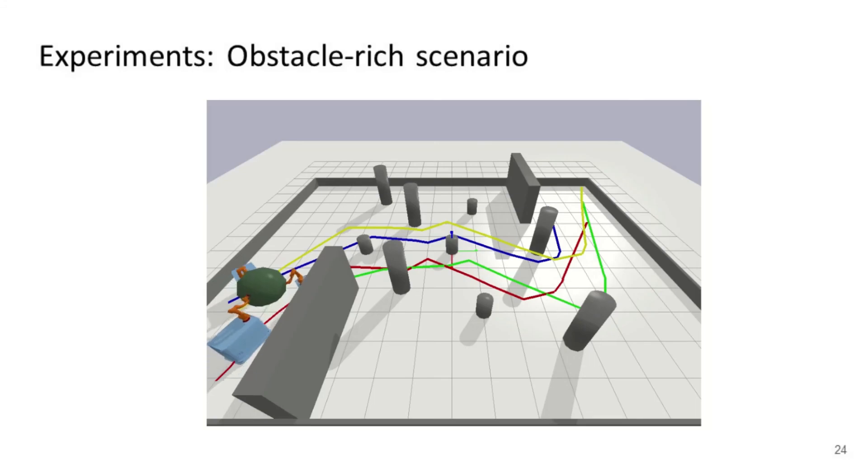In the second experiment, we evaluated our planner on a team of three mobile manipulators in an obstacle-rich scenario. Our simulation demonstrated that our proposed method can enable the team of mobile manipulators to change their base and arm configurations to pass through a complex environment. Moreover, the object can be manipulated in SE(3) space.